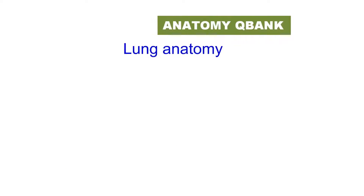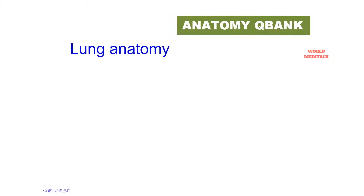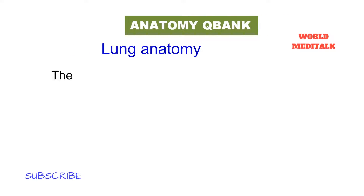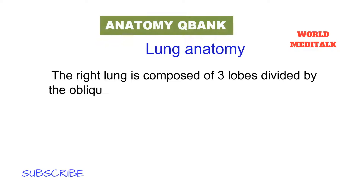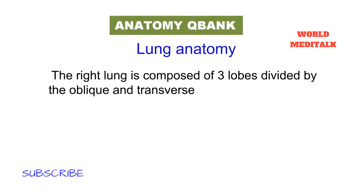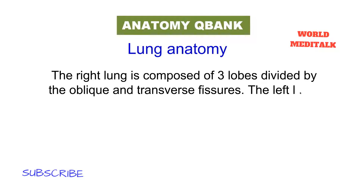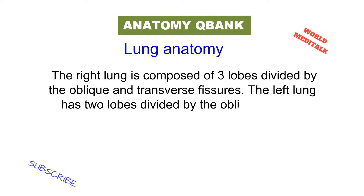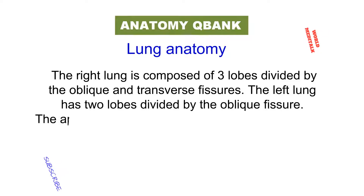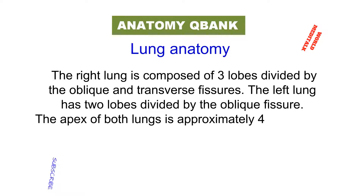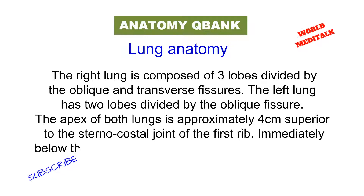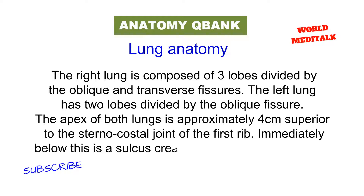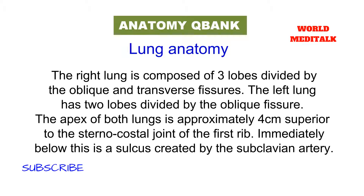Now let's talk a little bit about the anatomy. The right lung is composed of three lobes divided by oblique and transverse fissures. The left lung has two lobes divided by the oblique fissure. The apex of both lungs is approximately 4 cm superior to the sternocostal joint of the first rib. Immediately below this is a sulcus created by the subclavian artery.